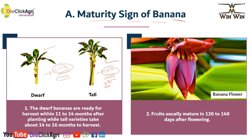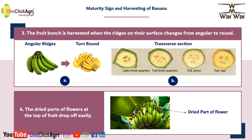The fruit bunch is harvested when ridges on the surface change from angular to round. Please see this picture — you will find angular ridges present on the fingers or banana fruit, and this gradually turns round or flat. You can see here in the transverse section: first is the light three cortex — you will find the angular ridges on the fruit, and this gradually changes to flat at the time of full ripening.